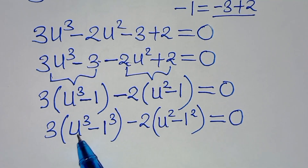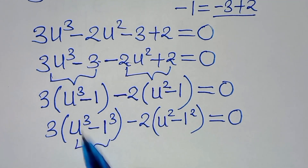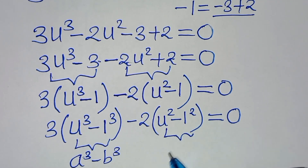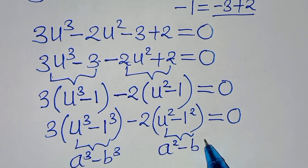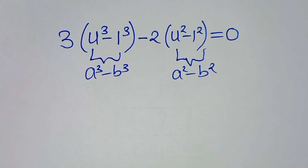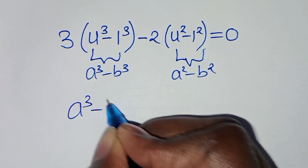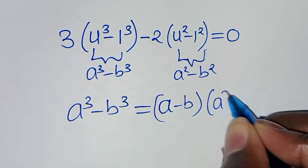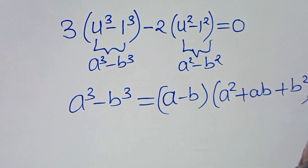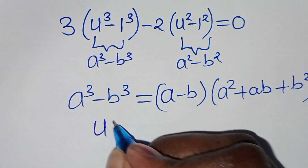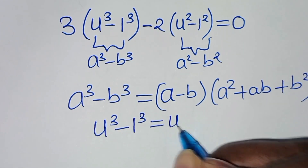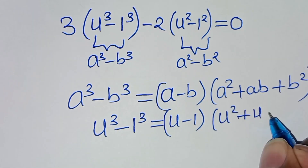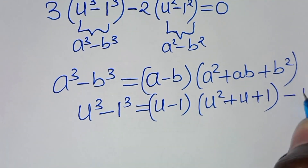We can express this as 3(u³ minus 1³) minus 2(u² minus 1²) equals 0. From the first part, this is the difference of two cubes, expressed as a³ minus b³. This can be expressed as (a minus b)(a² plus ab plus b²), so u³ minus 1³ equals (u minus 1)(u² plus u plus 1). Let's call this equation 1.